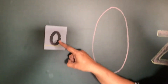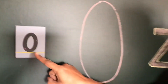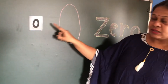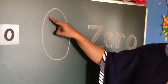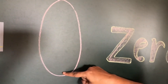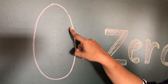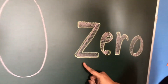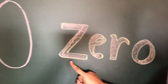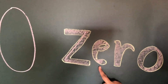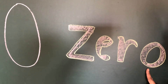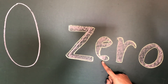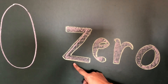If there is no chocolate — agar aapke paas kuch bhi nahi hai to aapke paas kitna hai — zero! See, this is zero. You just have to join two curves to make the number zero. This is how you write it and practice. The number name for it is zero — Z, E, R, O.